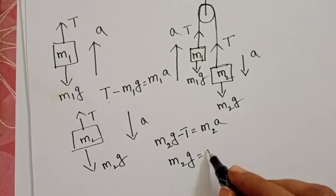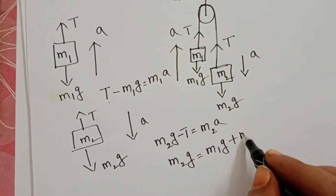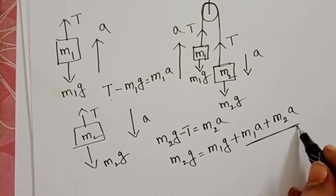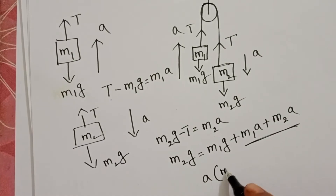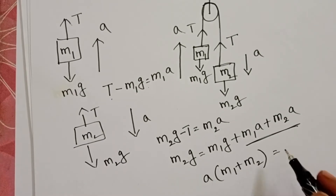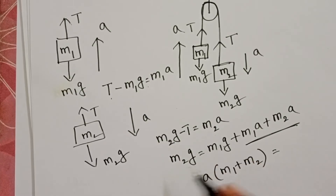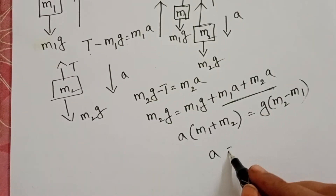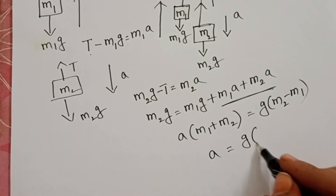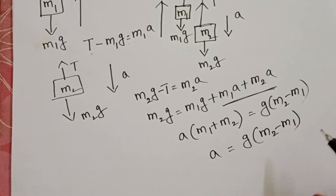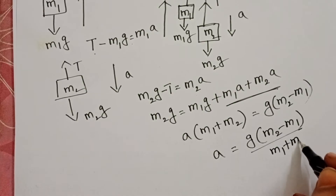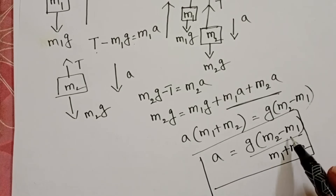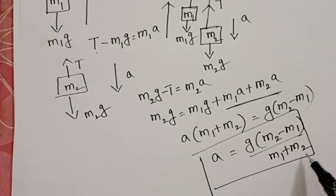Substituting T into the M2 equation: M2g equals M1g plus M1a plus M2a. Taking acceleration common: a times (M1 plus M2). Taking g common on the left side: g times (M2 minus M1). Therefore, acceleration equals g times (M2 minus M1) divided by (M1 plus M2) — that is, the difference of weights divided by the sum of the masses.